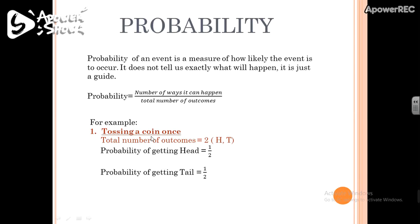The first example is tossing a coin once. Whenever you toss a coin, you either get a head or a tail, so there are two possible outcomes. The total number of outcomes equals 2 — head and tail. For the probability of getting a head: out of these two outcomes, head can occur only one time, so the number of ways of getting a head equals 1.